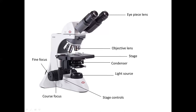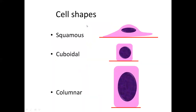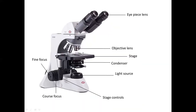The nosepiece is the area which you can move. Attached to it are the objective lenses. In this particular microscope, there are four objective lenses, and you can see the bands of color that tell you the magnification size. The lowest magnification is 4, the yellow band is magnification 10, and the blue band is magnification 40.